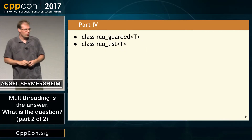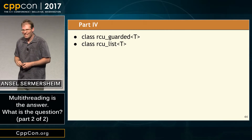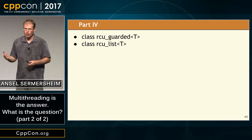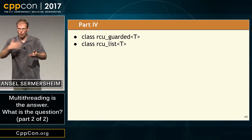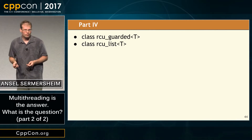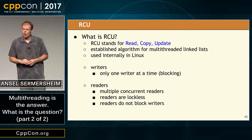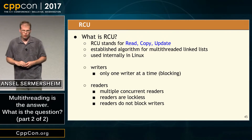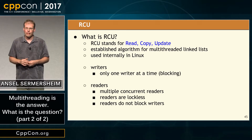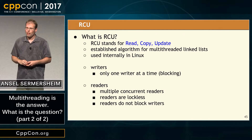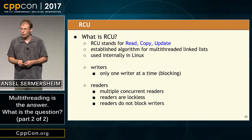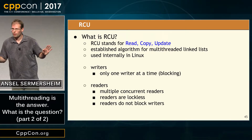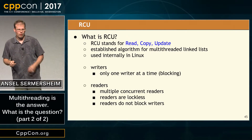Two classes: RCUGuarded and RCUList. RCUGuarded is the outer wrapper that enforces access to the shared container, and the container itself must be written to be aware of threading. RCU is an algorithm used in many pieces of code including the Linux kernel — a well-established algorithm for managing linked lists in a multi-threaded way. The classical RCU algorithm: one writer at a time, so writers block writers. Multiple concurrent readers, readers take no locks at all, and readers never block writers.